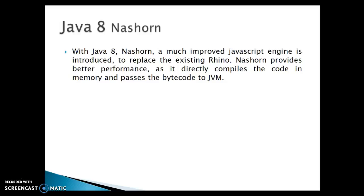With Java 8, Nashorn - a much improved JavaScript engine - is introduced to replace the existing Rhino. Rhino was one of the predecessors of Nashorn. Nashorn gives much better performance than Rhino, as it directly compiles the code in memory and passes the bytecode to the JVM.